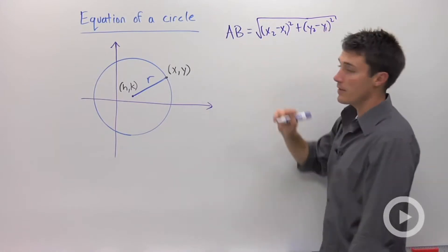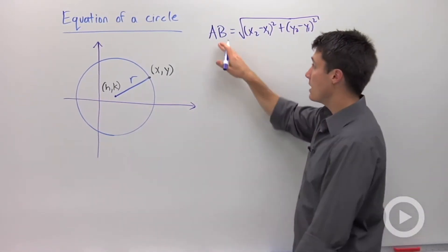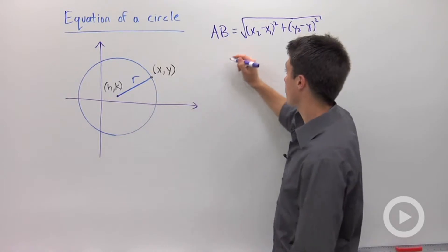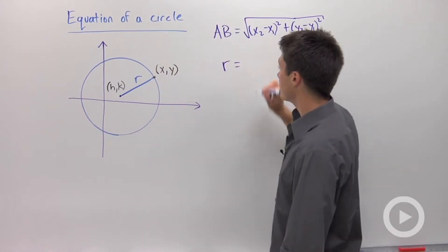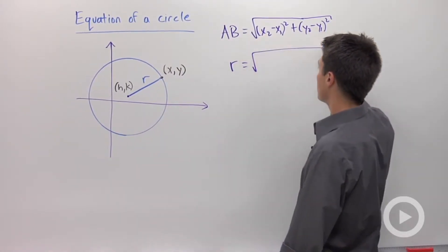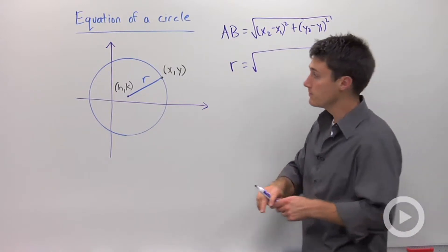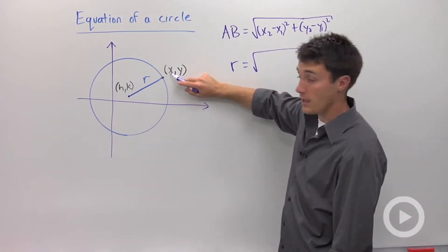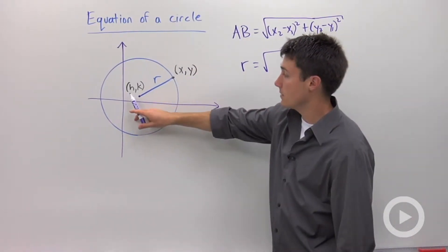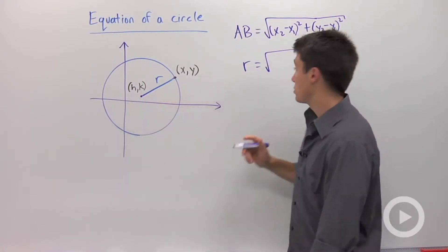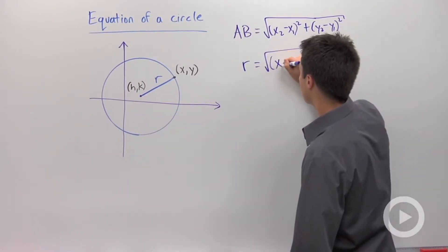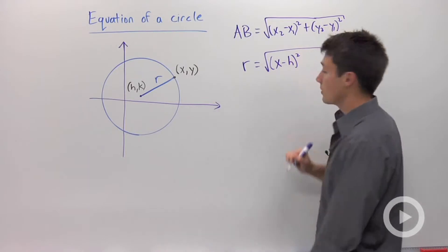So let's apply that to this problem. AB is actually the radius of this problem, that's what we're trying to find. So the radius is equal to the square root, if I subtract my x's I see that I have x as this point, and my center of my circle is at h. So we're going to say this is x minus h, quantity squared.